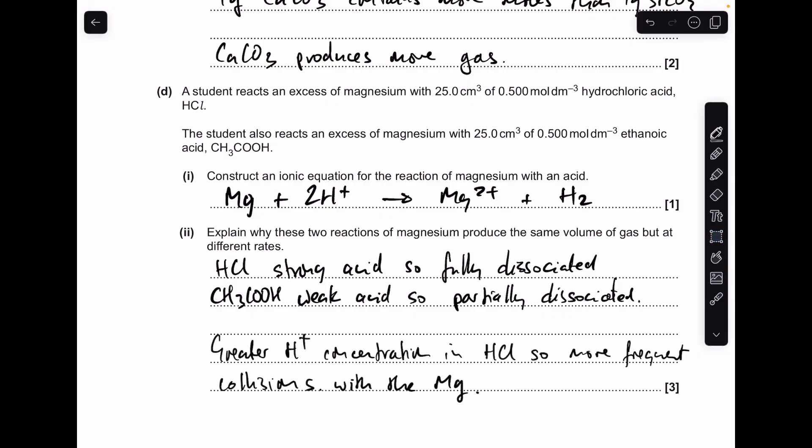Next thing we need to mention is because of that nature of dissociation, the HCl has a greater H plus concentration, so it's going to have more frequent collisions with the magnesium.